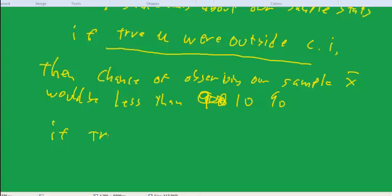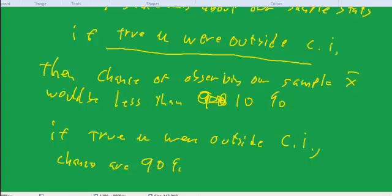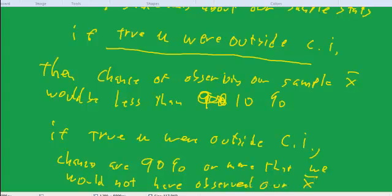Or to put it in positive terms, if the true mu were outside the confidence interval, that we would not have observed our x-bar. So we're making a probability statement about our x-bar.